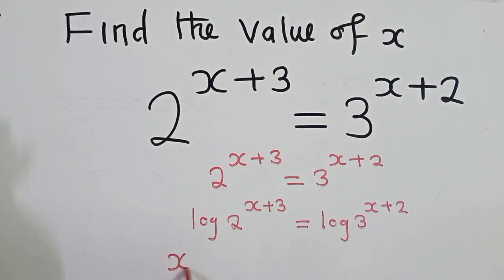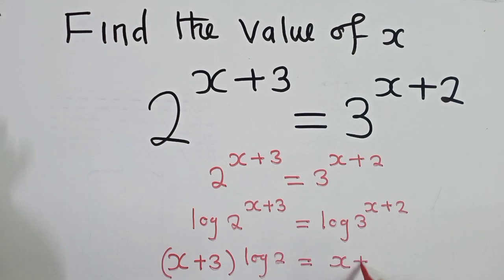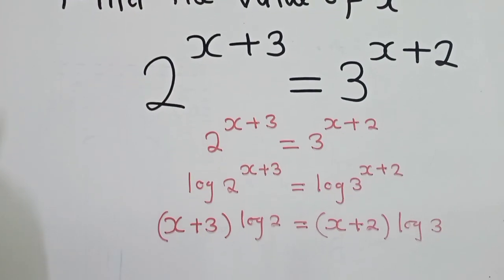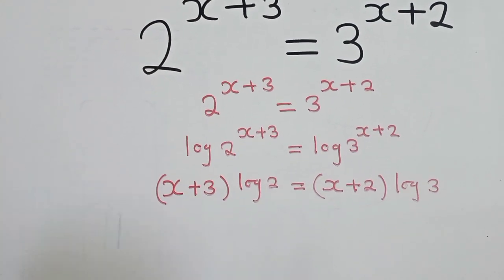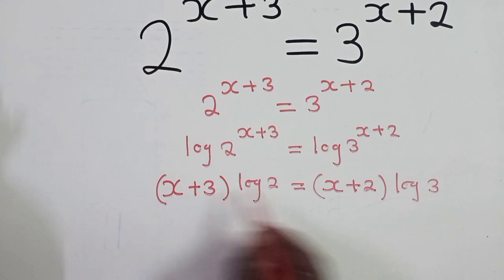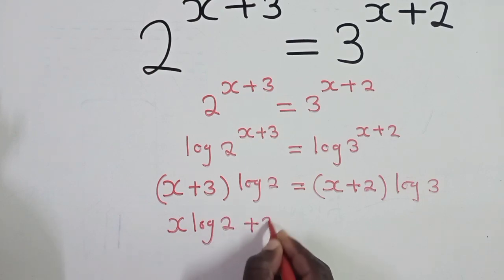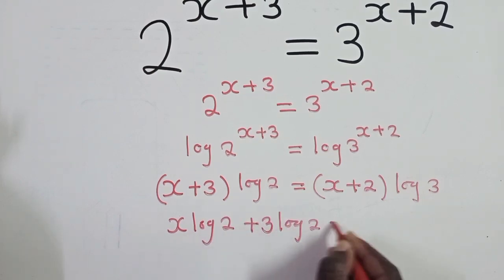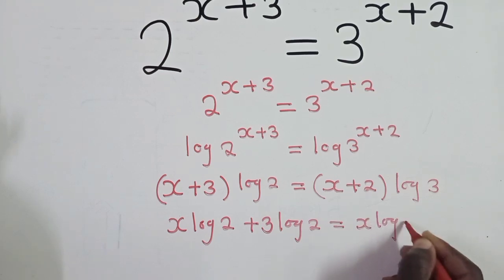So it will be x plus 3 inside the brackets log 2 is equal to x plus 2 log 3. So hopefully you're following these steps. Now from here, you can see that these brackets mean we multiply log 2 by everything inside. Even here, the same.